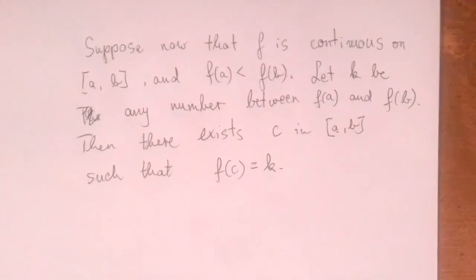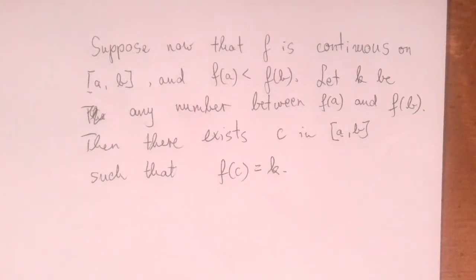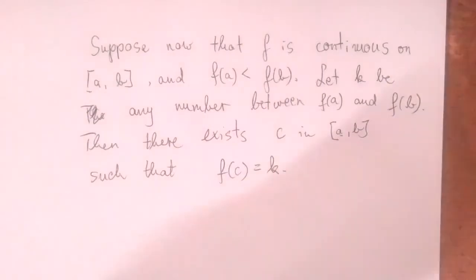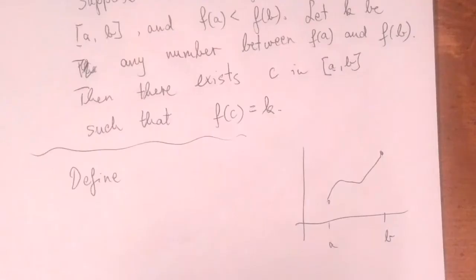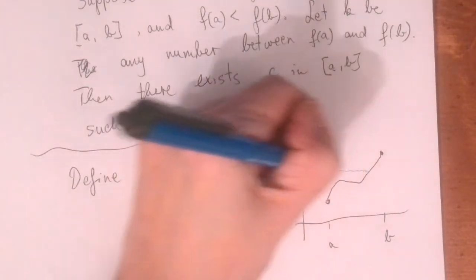Suppose now that we have a function that is continuous on the closed interval a, b, and that f of a is less than f of b. Let k be any number between f of a and f of b — an intermediate value. Then there exists a number c in the interval a, b such that the function value at c is k. We did the hard work already; this is going to be a very easy proof.